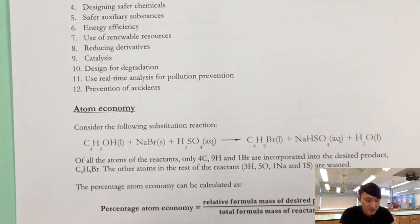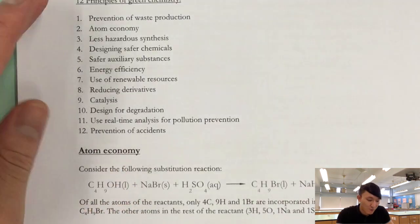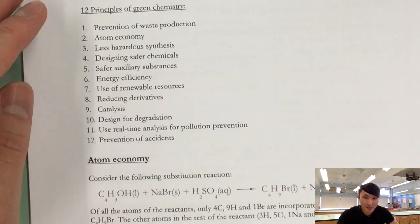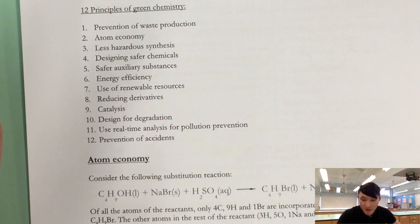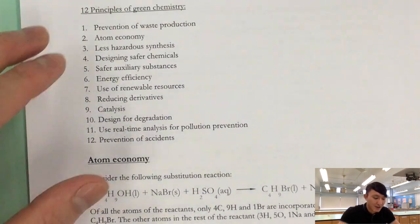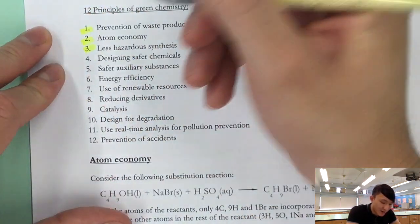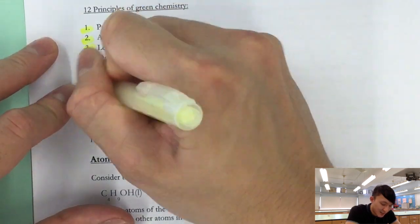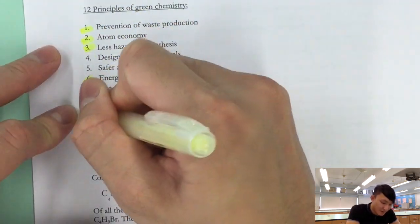Number eleven, real-time analysis for pollution prevention, basically to prevent pollution. And lastly, prevention of accidents. This is very obvious. Now these are 12 principles—do we have to memorize them? Well we don't. For me I feel like number one, number two, number three, number six, number seven, and number nine...